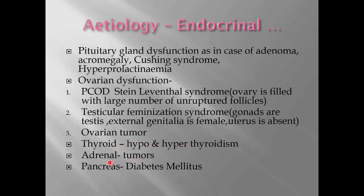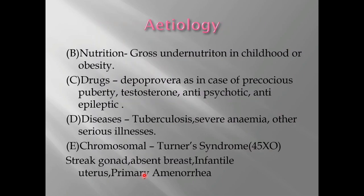At the thyroid gland level, hypothyroidism or hyperthyroidism can be a cause. Adrenal tumors and diabetes mellitus from pancreatic problems can also cause amenorrhea. Nutritional causes include gross undernutrition in childhood or obesity — being very underweight or overweight can lead to amenorrhea. Certain drugs such as Depo-Provera (given in precocious puberty), testosterone, anti-psychotics, and anti-epileptics can also cause amenorrhea.